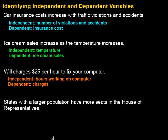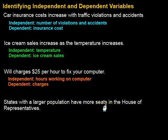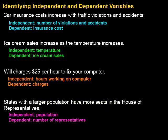So what do we have for variables? We've got population and the seats in the House of Representatives. We need to think about what controls what. Does the population determine how many seats they have, or does the number of seats in the government determine how many people live in that state? It's pretty clear that the population determines the number of seats. So population is our independent variable and the number of representatives — the number of seats — is the dependent variable.